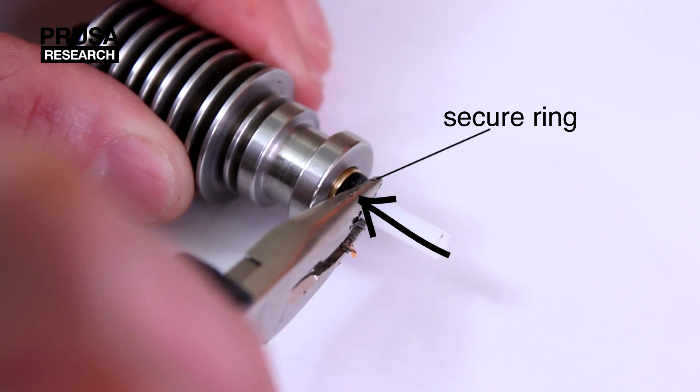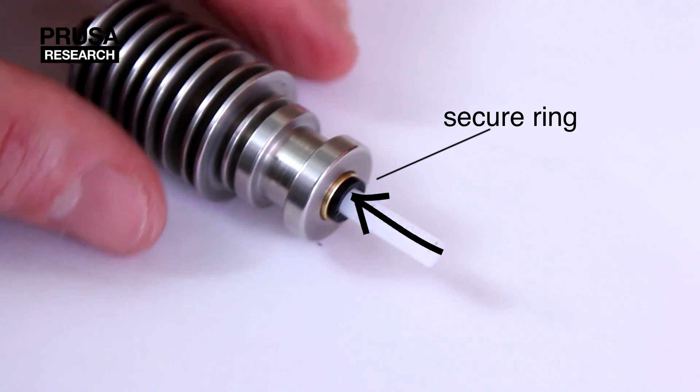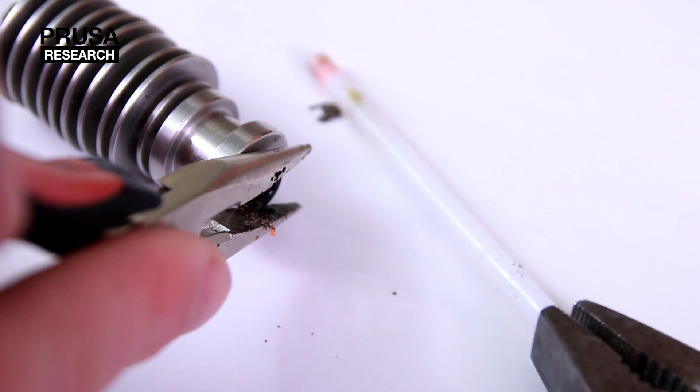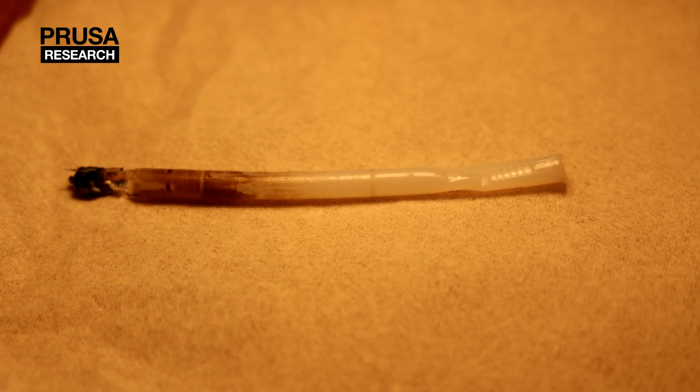We pull out the Teflon tube with pliers and carefully insert a new one. The damaged Teflon tube has its end burnt and is necessary to replace it.